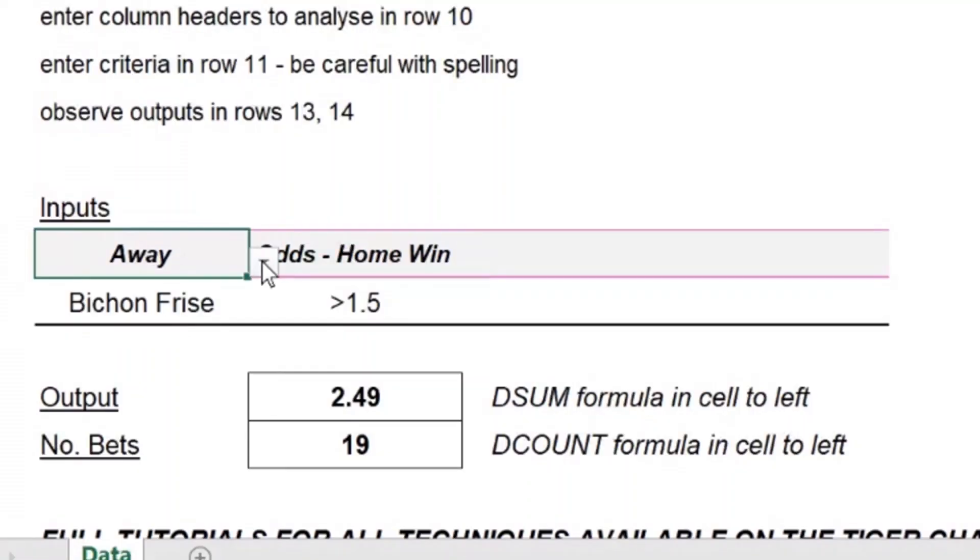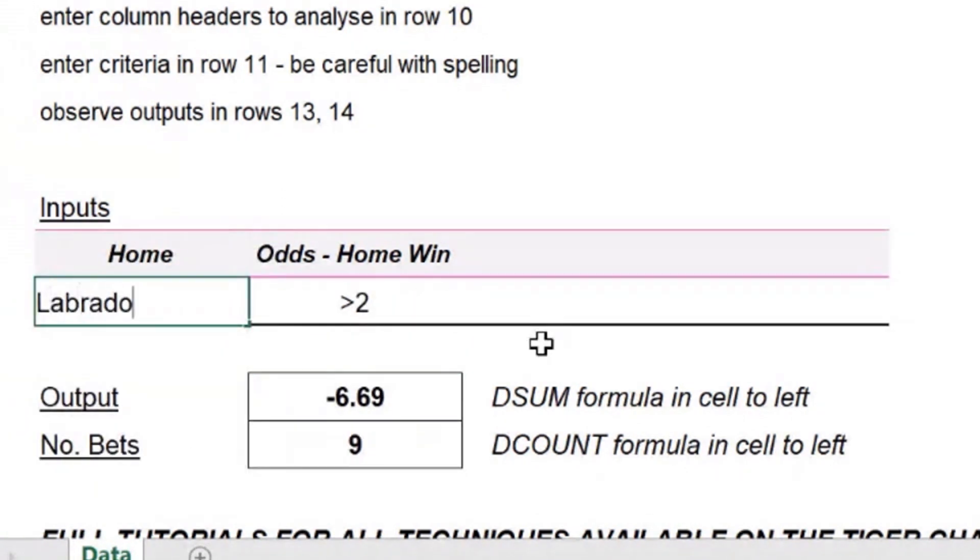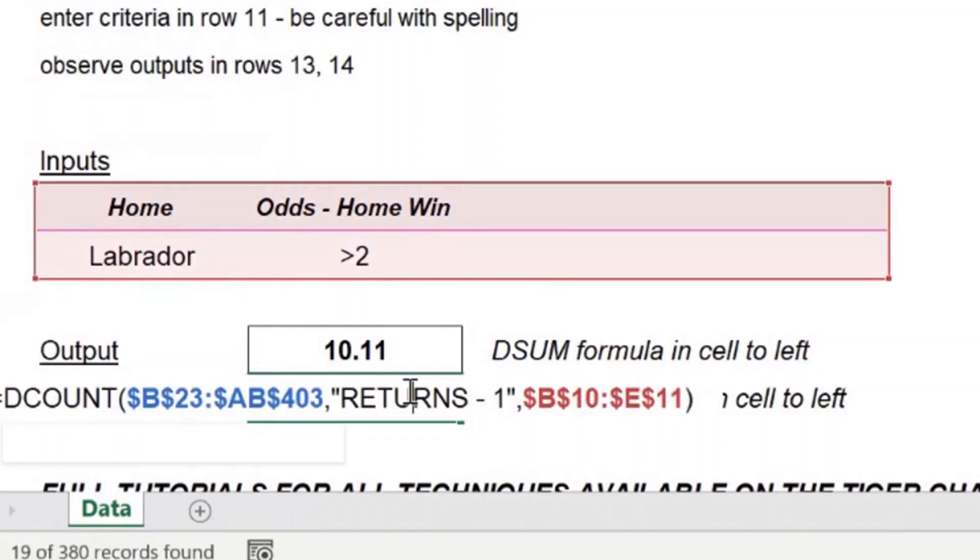We can set up the DSUM formula in the spreadsheet as we would set up any other formula, although we do need a little bit of preparation. We can specify the column headers we want to look at and then simply type in the values we want to filter on. DSUM is going to give us the sum of those values. And look out for DSUM's mates, DCOUNT and DAVERAGE — they're going to get the average and count of the filtered values, just like with DSUM. DSUM is so powerful; it's at the heart of almost all of the football analysis I do in Excel. You need to know it.